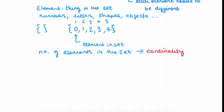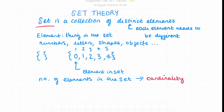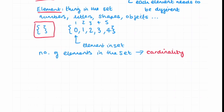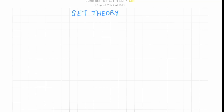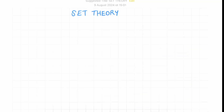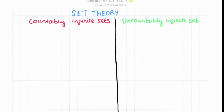The number of elements in a set is known as the cardinality. The cardinality is a measure of the relative size of a set. So to recap: a set is a collection of distinct elements, denoted with curly braces, where each element is unique. The number of elements is the cardinality. We have two main types of sets — finite and infinite — and then two types of infinite sets: countably infinite and uncountably infinite.